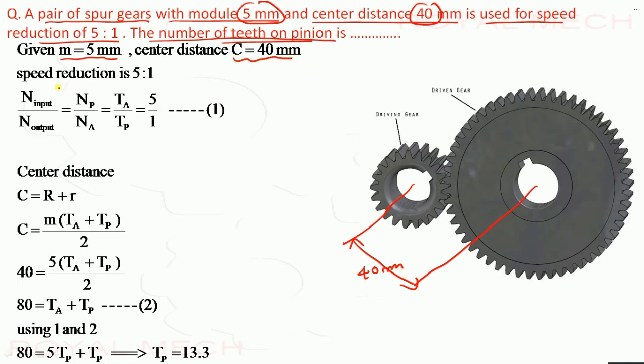And then speed reduction is 5 is to 1. So for every 5 revolution of small gear or pinion, there is 1 revolution of big gear. That is why speed reduction is 5 is to 1. So that we can write N input upon N output, that is pinion. Input is at pinion. Output is at this big gear. So Np upon Ng equal to Tg upon Tp, that is equal to 5 divided by 1. That is we know speed ratio N1 by N2 equal to T2 by T1. We call this as speed ratio. So that is written here. So that is equal to speed reduction 5 upon 1.